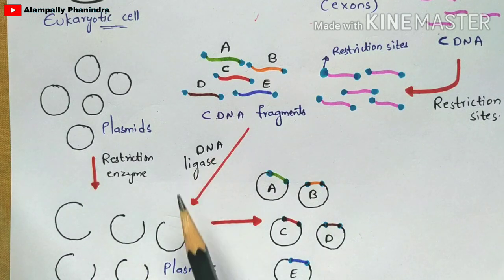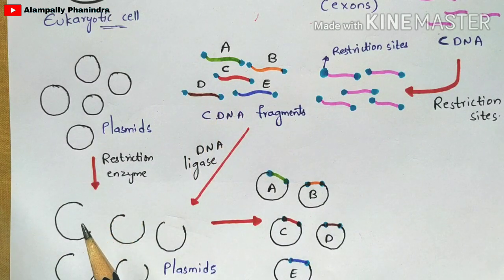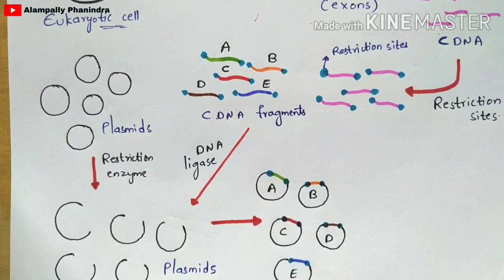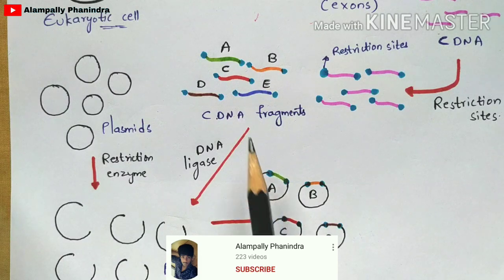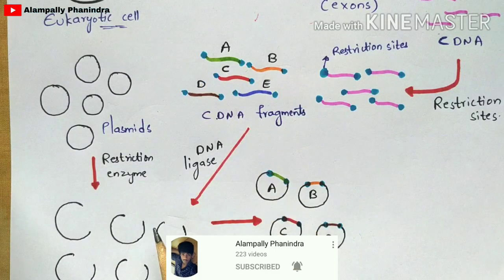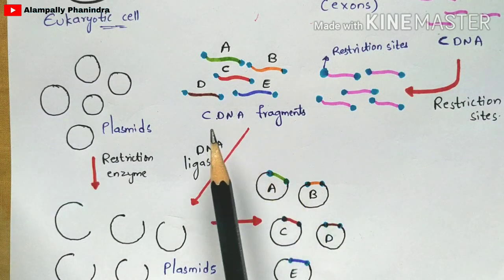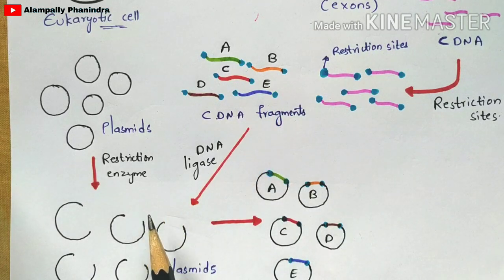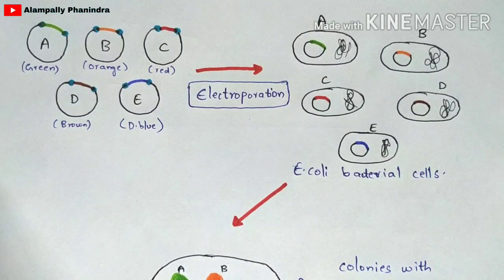The cDNA fragments get ligated to these opened plasmids using an enzyme called DNA ligase. For example, one cDNA fragment is attached to one plasmid — in scientific terms, the cDNA is ligated into the plasmid. The plasmid now contains an inserted cDNA fragment. In the same way, for all remaining plasmids, the corresponding cDNA fragments are ligated — five plasmids (A, B, C, D, E) each receiving one of the five cDNA fragments — forming cloned plasmids.